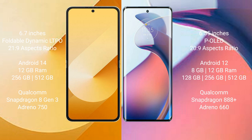The Samsung Galaxy Z Flip 6 comes with 12GB RAM and 256GB or 512GB internal storage, a Qualcomm Snapdragon 8 Gen 3 processor, and an Adreno 750 GPU. The Motorola Moto S30 Pro comes with 8GB or 12GB RAM and 128GB, 256GB, or 512GB internal storage, a Qualcomm Snapdragon 888 Plus processor, and an Adreno 660 GPU.